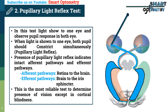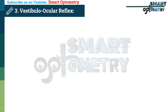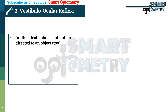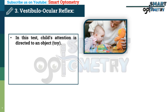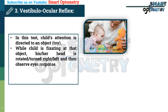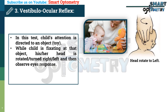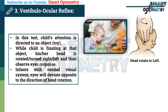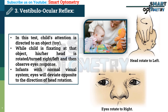This is the most reliable test to determine the presence of vision, except in cortical blindness. Vestibulo-ocular reflex test: In this test, the child's attention is directed to an object, which can be a toy. While the child is fixating at that object, his or her head is rotated or turned right or left, and then the eye's response is observed. In a child with a normal visual system, the eyes will deviate opposite to the direction of head rotation.